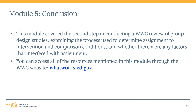This concludes the fifth module in the WWC group design standards training. We discussed the two research designs eligible for review — randomized controlled trials and quasi-experimental designs — how to identify eligible RCTs with well-executed randomization, how to identify eligible QEDs, and how to determine the level of assignment to conditions. All resources mentioned in this module are available on the WWC website at whatworks.ed.gov.